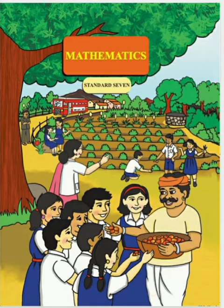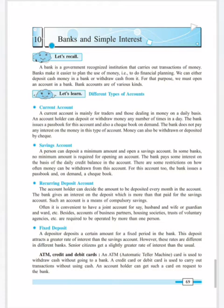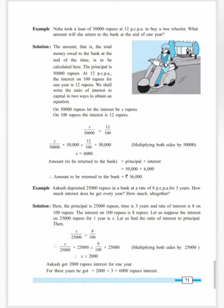Students, let's start solving the example on textbook page number 71. Neha took a loan of 50,000 rupees at 12 PCPA to buy a two-wheeler. What amount will she return to the bank at the end of one year? So how much amount does she have to pay to the bank after one year? This is what we are asked to solve.